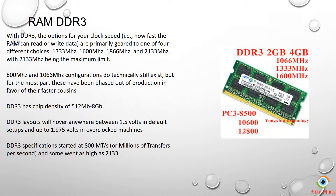800 and 1066 MHz technically exist but are being phased out in favor of faster options like 1866 and 2133 MHz. DDR3 has a chip density of 512 MB to 6 GB. These modules run anywhere between 1.5 volts in default setups to 1.975 volts in overclocked modes, with transfer rates starting at 800 million transfers per second, going as high as 2133.